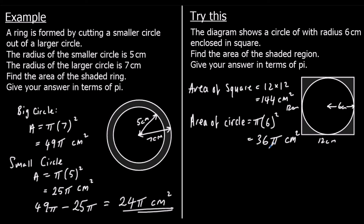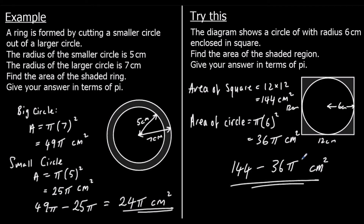So what's the shaded area? It's the area of the square — 144 — take away the area of the circle, which is 36 pi. We can't simplify it; that's as simple as it gets. So the answer is 144 take away 36 pi centimetres squared. If we wanted a decimal answer, we could just type it into the calculator.